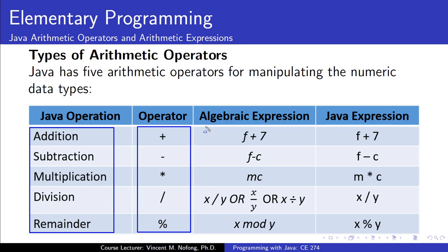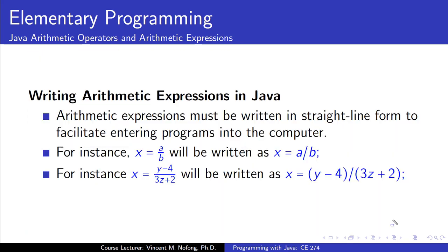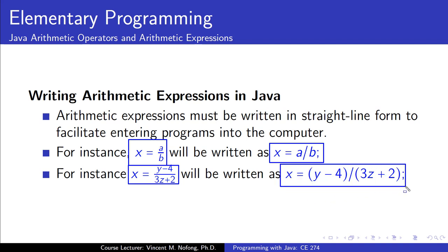These two columns basically depict the Java expressions for some common algebra expressions that we are used to. In Java, arithmetic expressions are always written in straight-line form. For example, if we look at the expression x equals a divided by b, we have to write it in straight-line form. Similarly, x equals y minus 4 divided by 3z plus 2 would be written entirely in a straight line in Java.